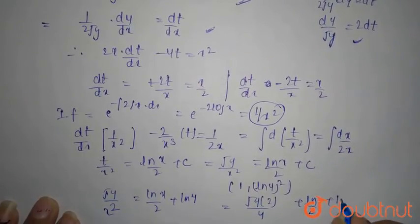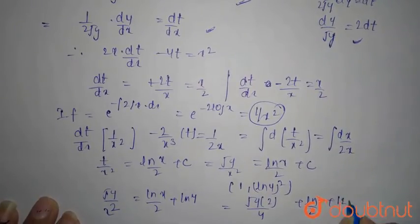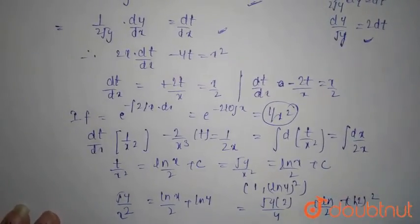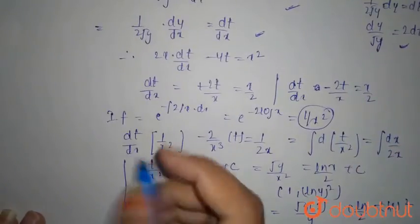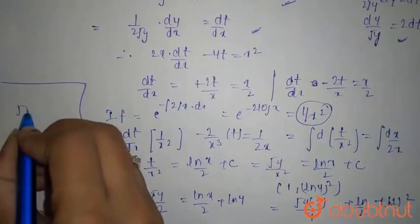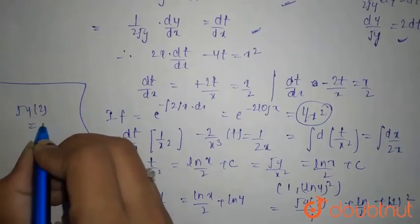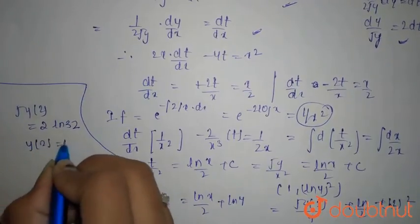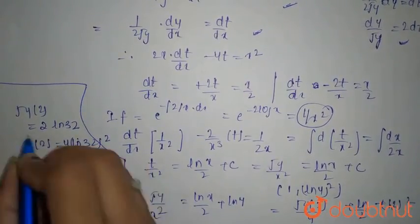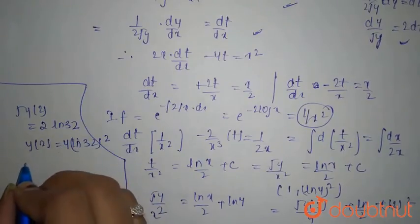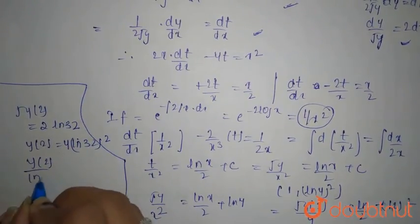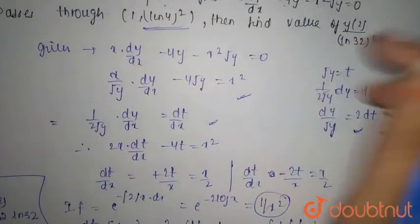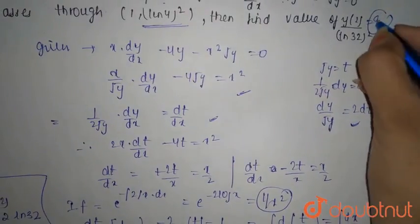I am doing it here because it is so messy now. Root y(2) equals 2 ln 32, which is nothing but y(2) equals 4 (ln 32)², squaring both sides. You will have y(2)/(ln 32)² equals 4. We need to find the value of this which equals 4. I hope it is clear. Thank you.